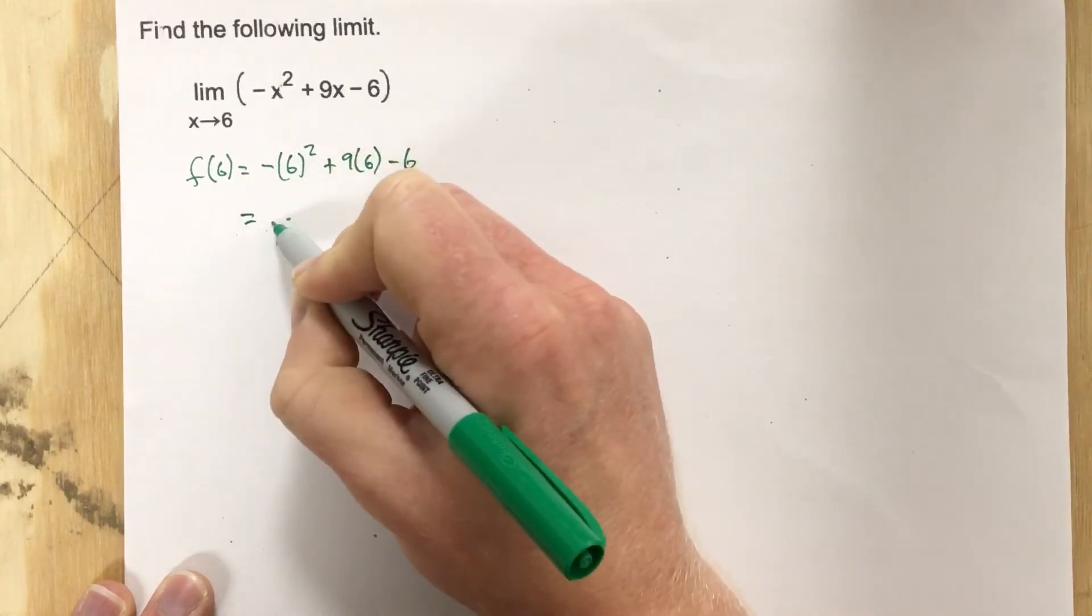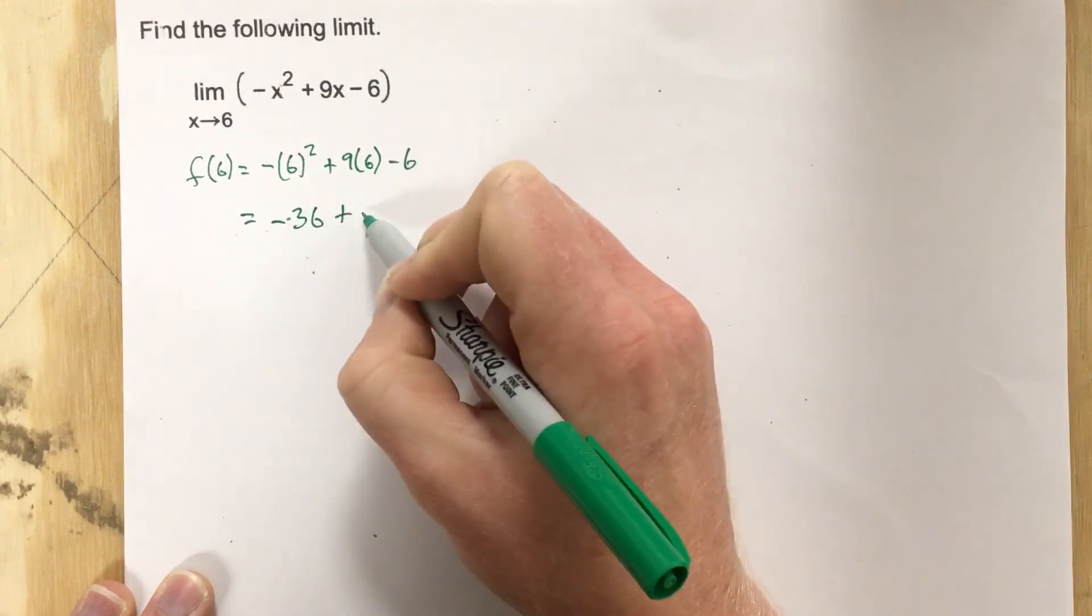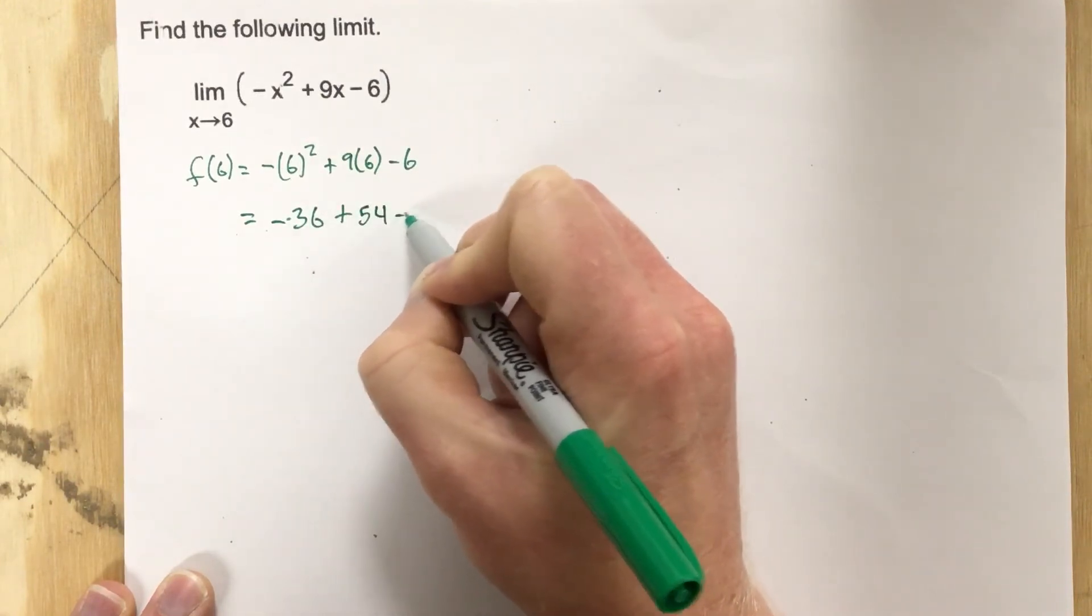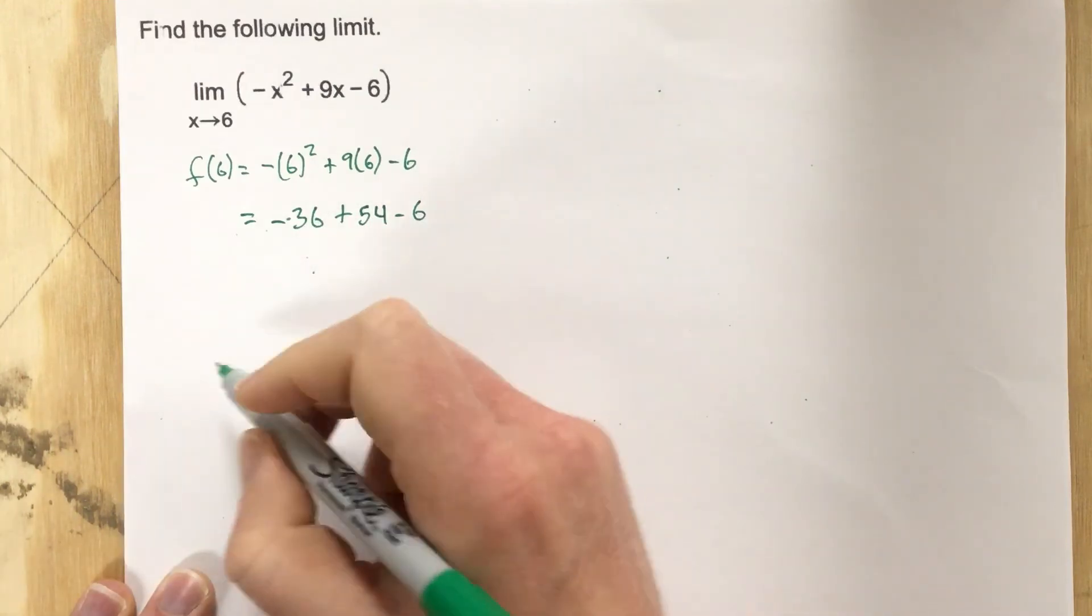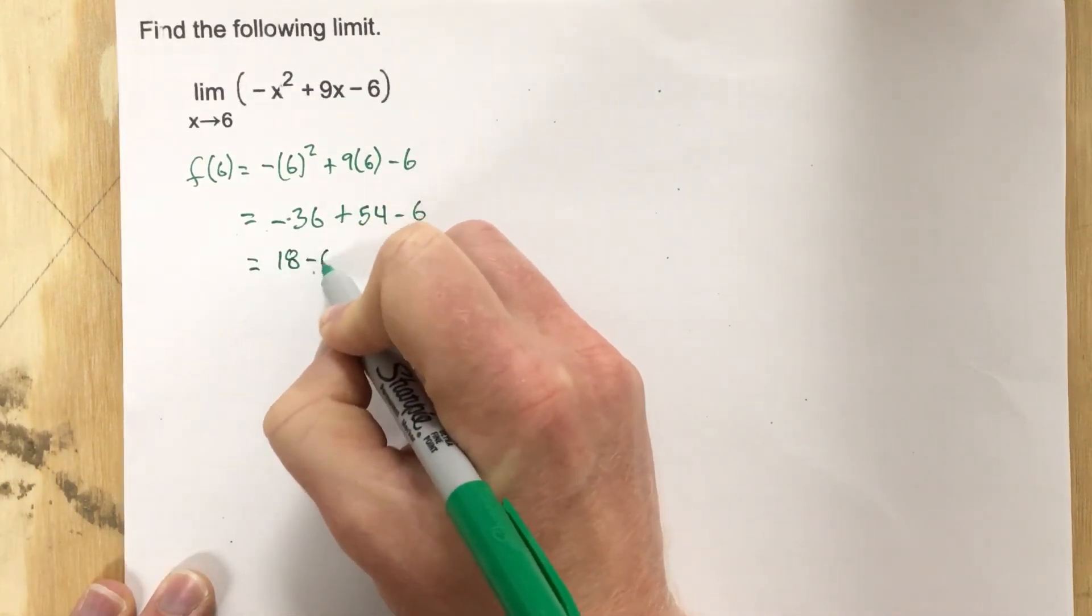So that's going to give you negative 36 plus 54 minus six. Negative 36 and 54, that's 18 minus six,